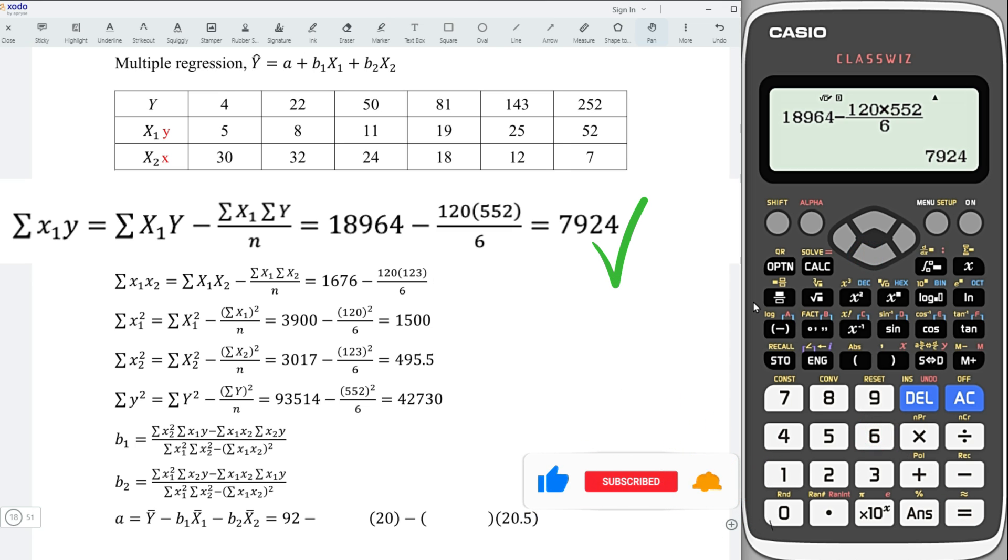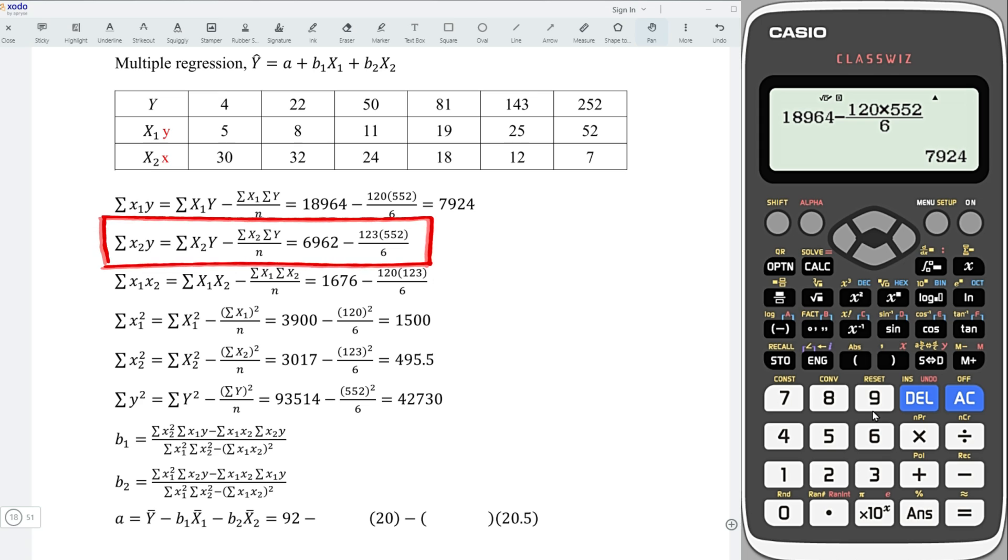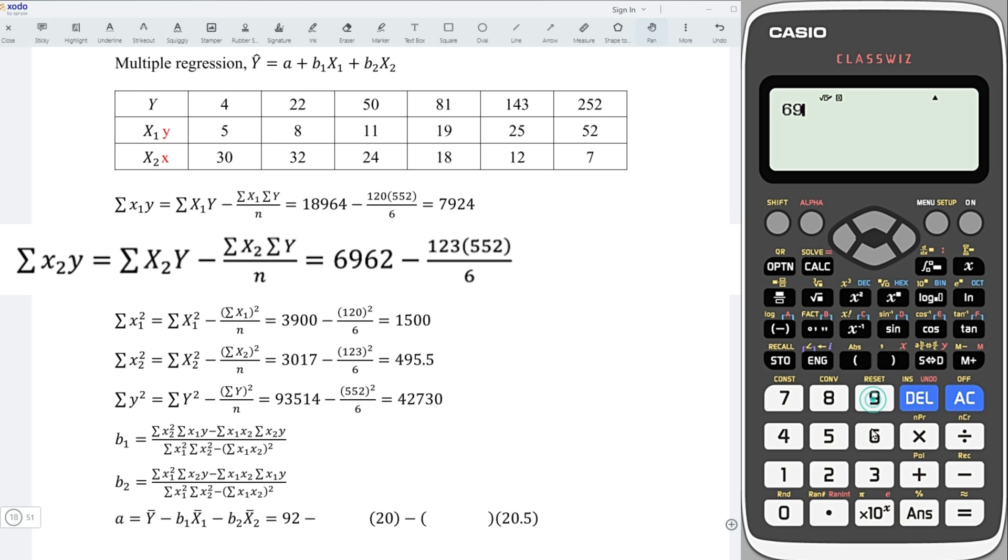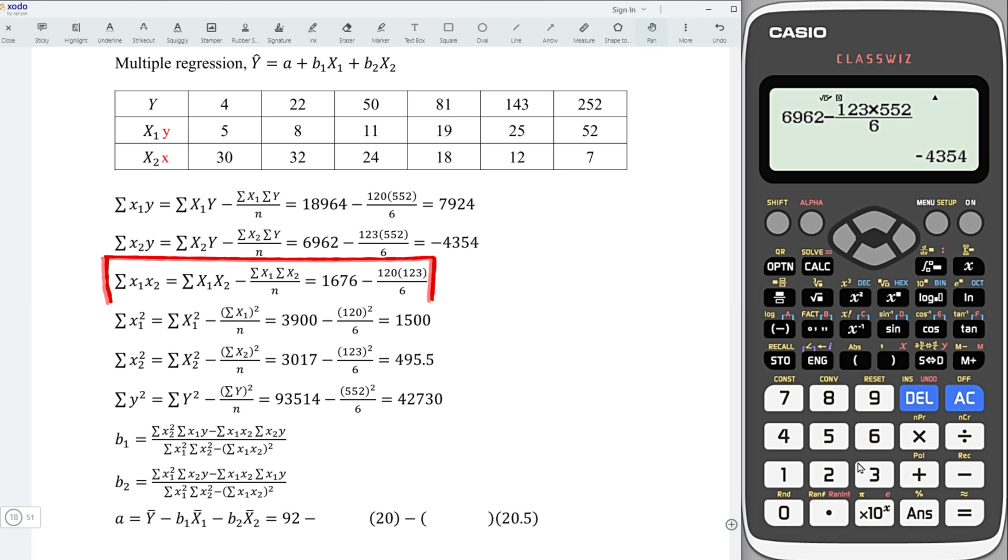Second sum of squares, 6,962, minus, fraction, 123, multiply, 552, divided by 6. Equal, obtain the value.